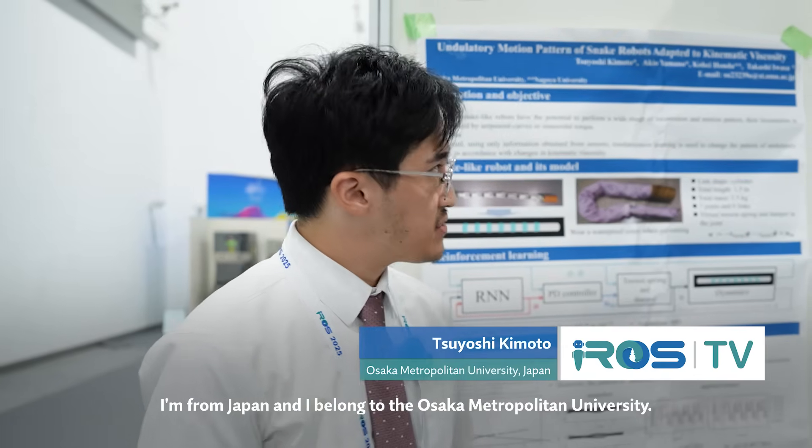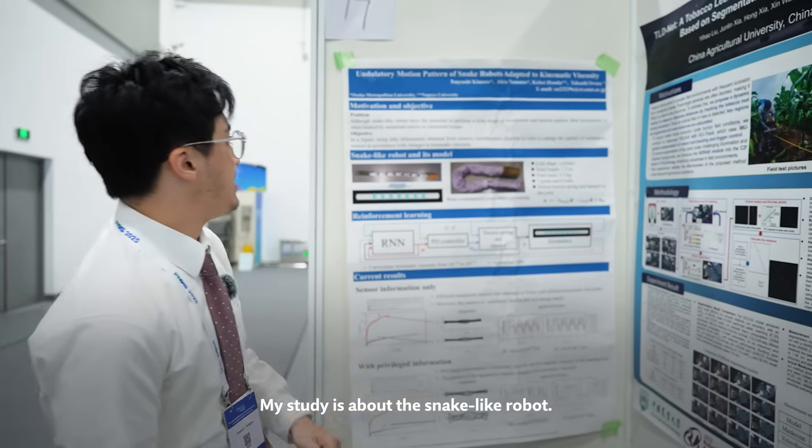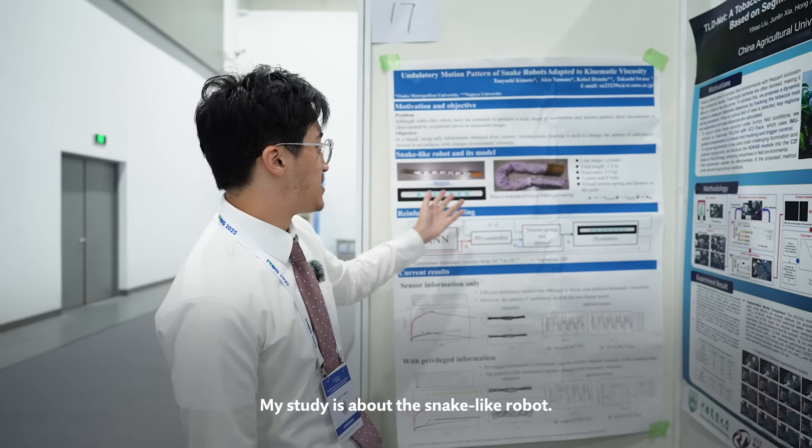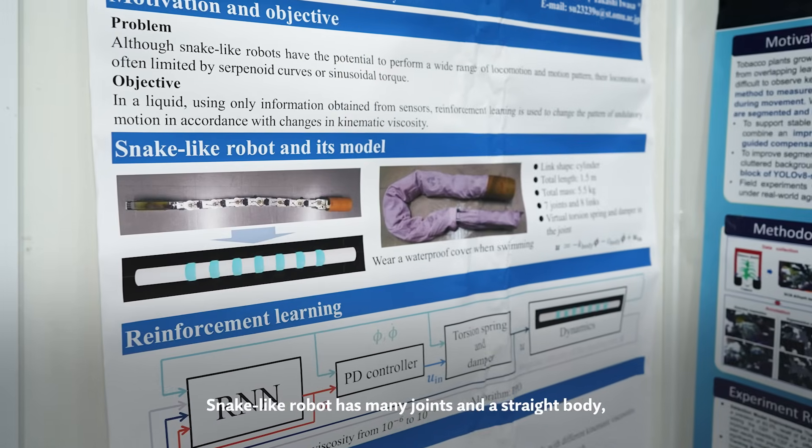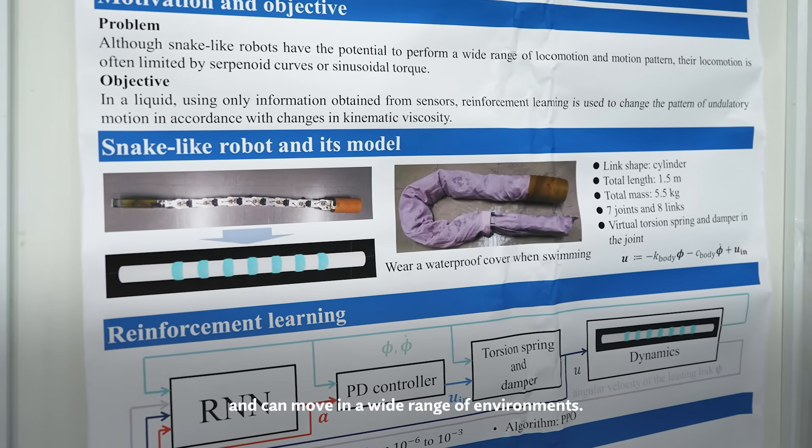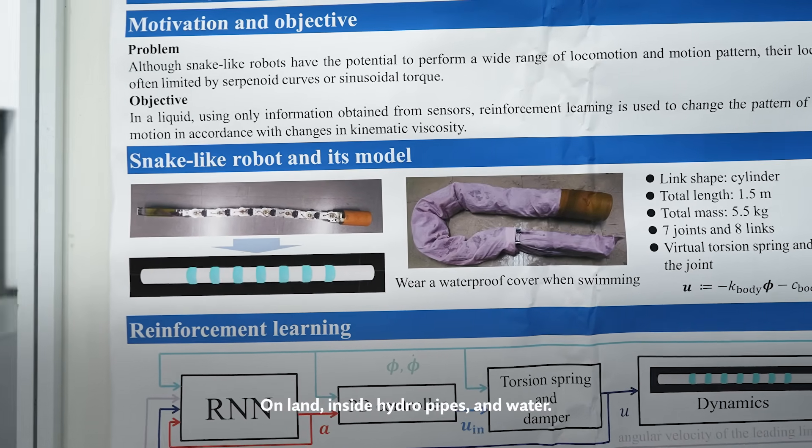My name is Yoshi Kimotoro and I'm from Japan. I belong to the Osaka Metro Polytechnic University. My study is about a snake-like robot. A snake-like robot has many joints and strength in the body, and it can move in a wide range of environments, on land or inside pipes and in water.